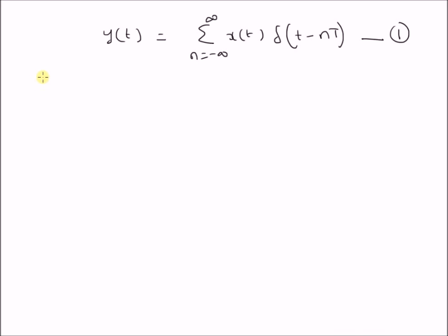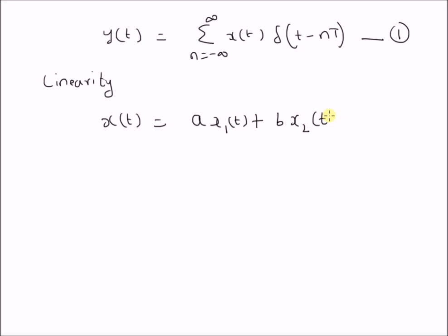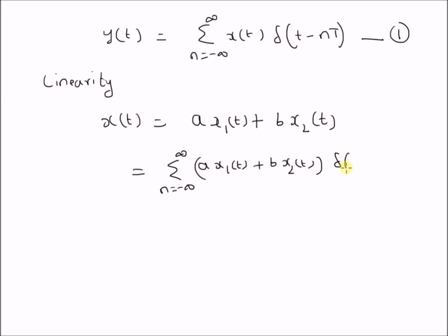For checking the linearity, consider an input that has the following structure: a times x1(t) plus b times x2(t). By using equation 1, we can derive the corresponding output as the sum from n equals minus infinity to plus infinity of [a·x1(t) + b·x2(t)] multiplied by the unit impulse delta(t minus nT). So clearly,